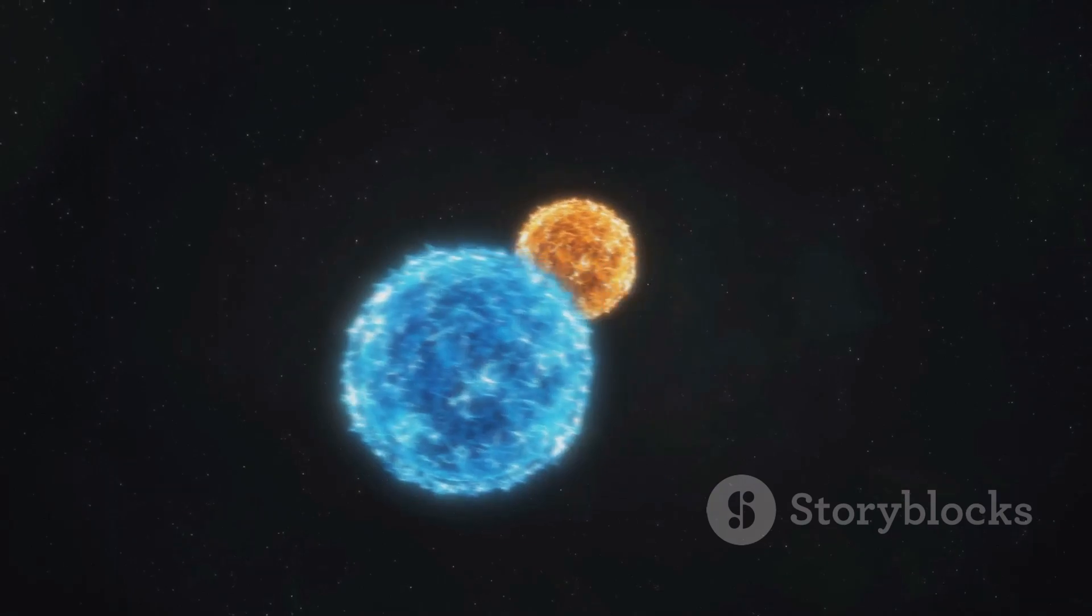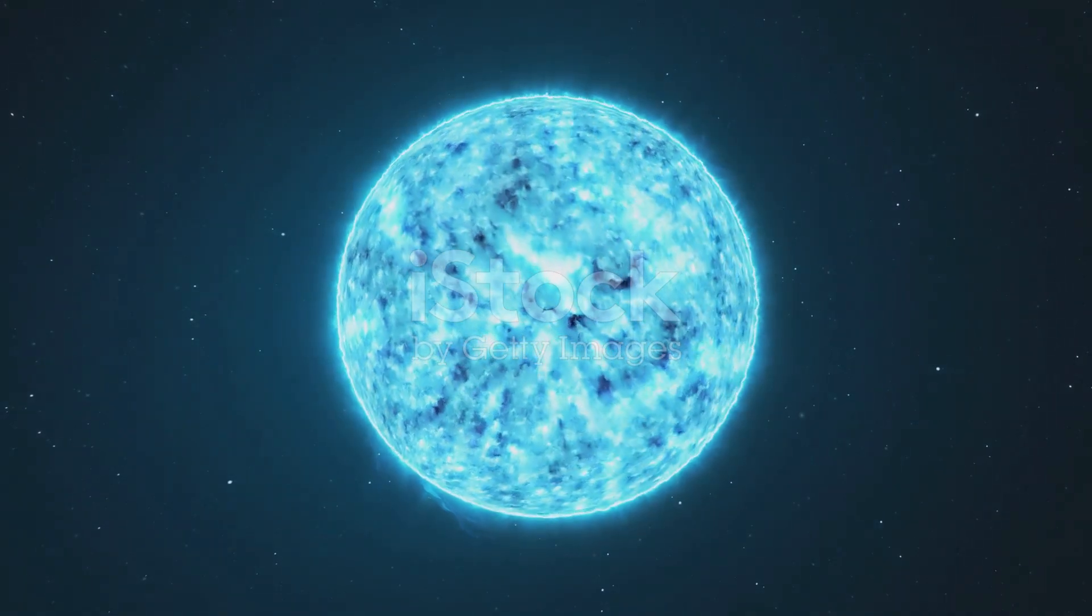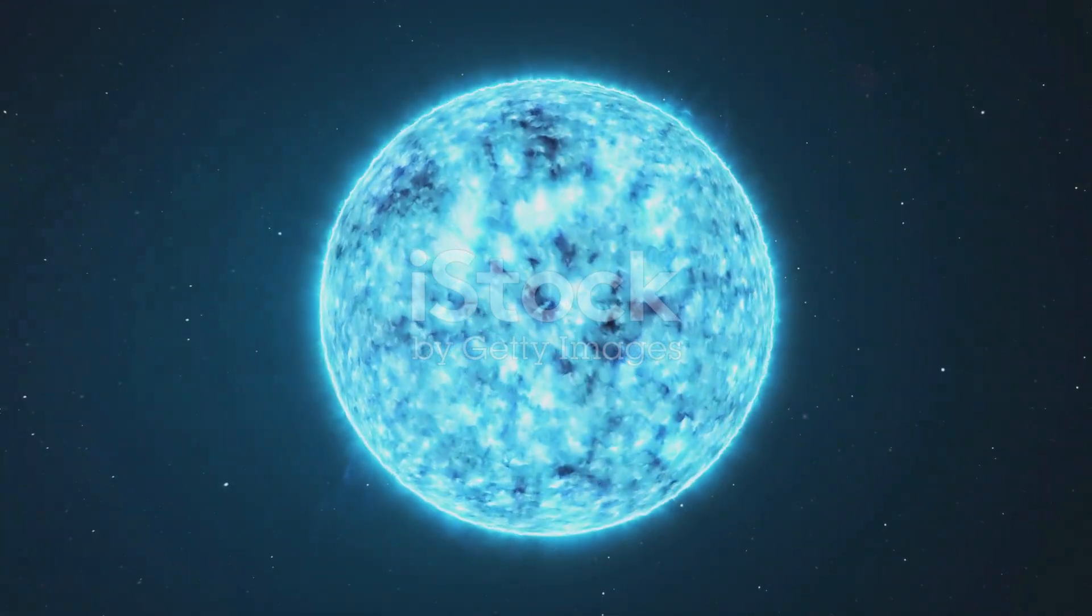Now, despite their small stature, these stars are anything but cool. They're scorching hot, hotter than anything you'll find on Earth. This intense heat causes them to shine predominantly in blue light, painting a beautiful azure hue across the cosmos.